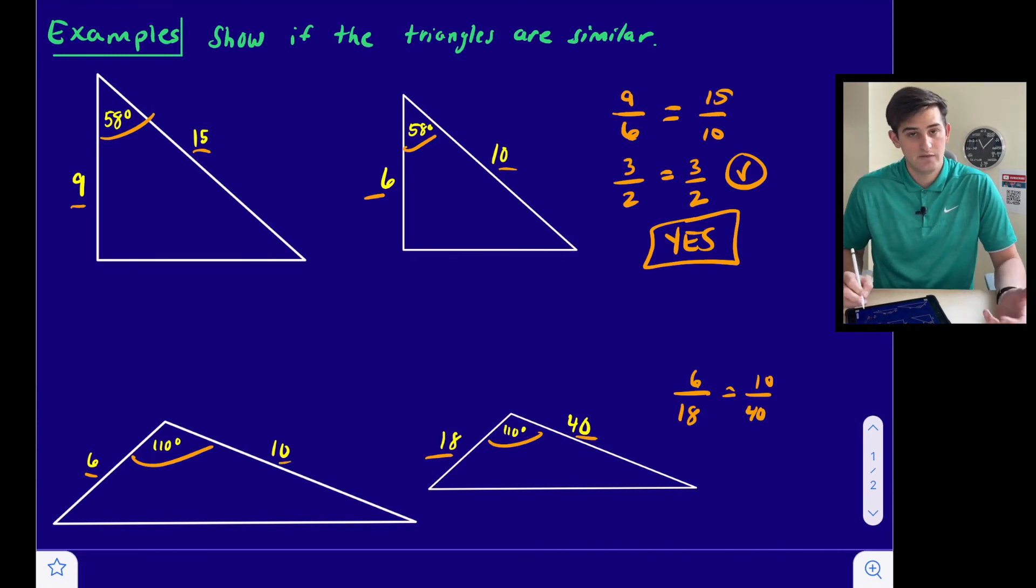6 over 18, we can divide 6 and 18 by 6, so this gives us one third. And 10 over 40 would be one fourth. No, those are not equal to each other, so we're going to say no, these two triangles are not similar.